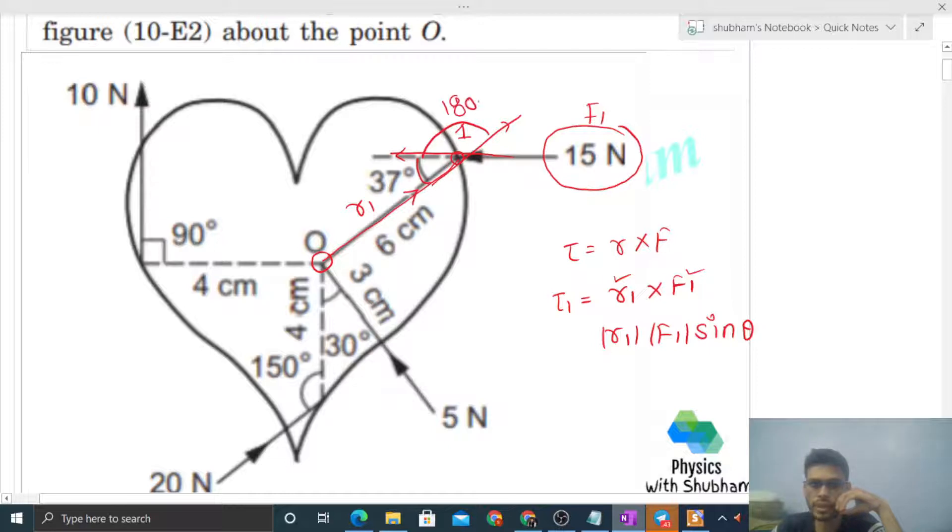So it will be 180 minus 37. r1's magnitude is 6 centimeters or 0.06 meters, times f1's magnitude 15, times sine of 180 minus 37, which is nothing but sine 37 itself, and sine 37 is 3 by 5.